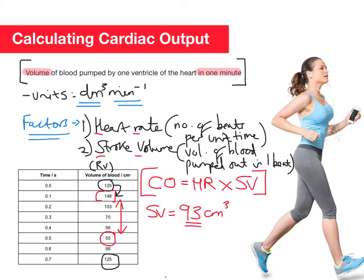Now let's look at heart rate — the number of beats per unit time. We can see one full cycle: one beat equals 0.7 seconds. If we want this per minute, we need to use a ratio and express it in terms of 60 seconds. To go from 0.7 up to 60, I divide by 0.7 to get 1, then multiply by 60. Applying the same operation to the beat count: 1 ÷ 0.7...